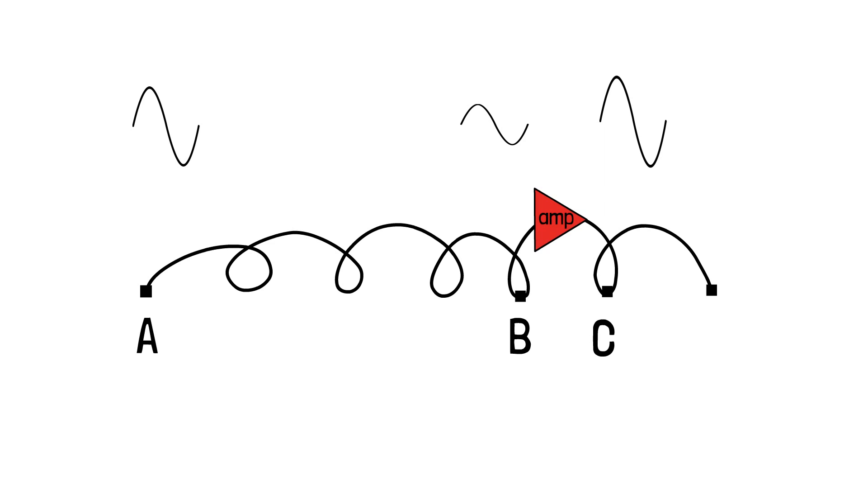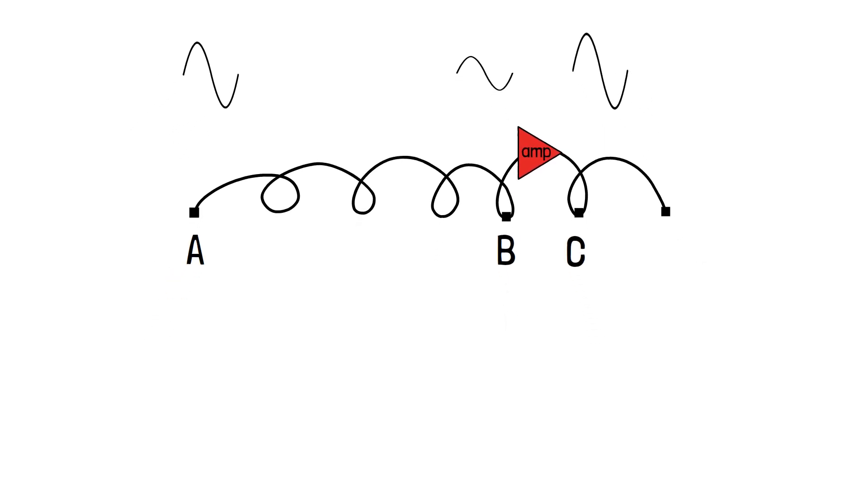The loss or gain in the signal strength is measured in decibel and calculated as 10 log to base 10 P2 by P1, where P1 and P2 are the powers of the signal at two points.